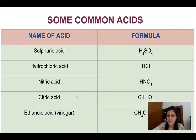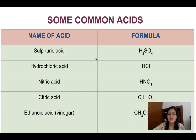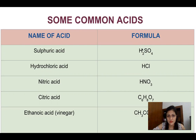These are some common acids you should know. I have given their chemical formulas on the right-hand side, so please go through this table. Sulfuric acid is H₂SO₄, hydrochloric acid is HCl, nitric acid is HNO₃, and citric acid is C₆H₈O₇. You should remember their chemical formulas, because in further chapters and classes you will use these formulas more than their names.